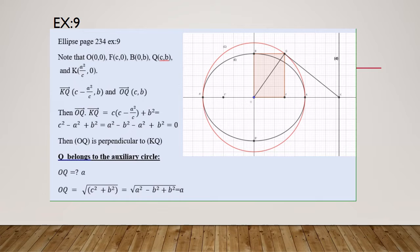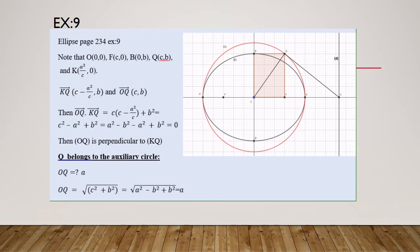First, the coordinates of O are (0, 0), F is (c, 0), B is (0, b), so the coordinates of Q are (c, b). Also, K belongs to the directrix x = a²/c, so the coordinates of K are (a²/c, 0). We calculate the vector QK and the vector OQ, then we find the scalar product OQ · KQ.